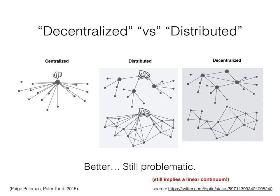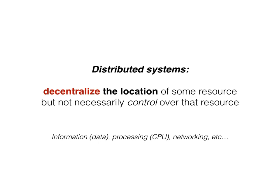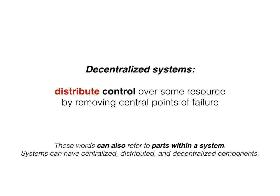So how do we use these terms today to describe systems? When we say a system is distributed, we mean that it decentralizes the location of some resource, but not necessarily the control over that resource. And when we talk about decentralized systems, we are talking about systems that distribute the control over that resource by removing central points of failure. These words can also be used to refer to parts within a system, so it's perfectly plausible to have a system that has components that are centralized, distributed, and decentralized.